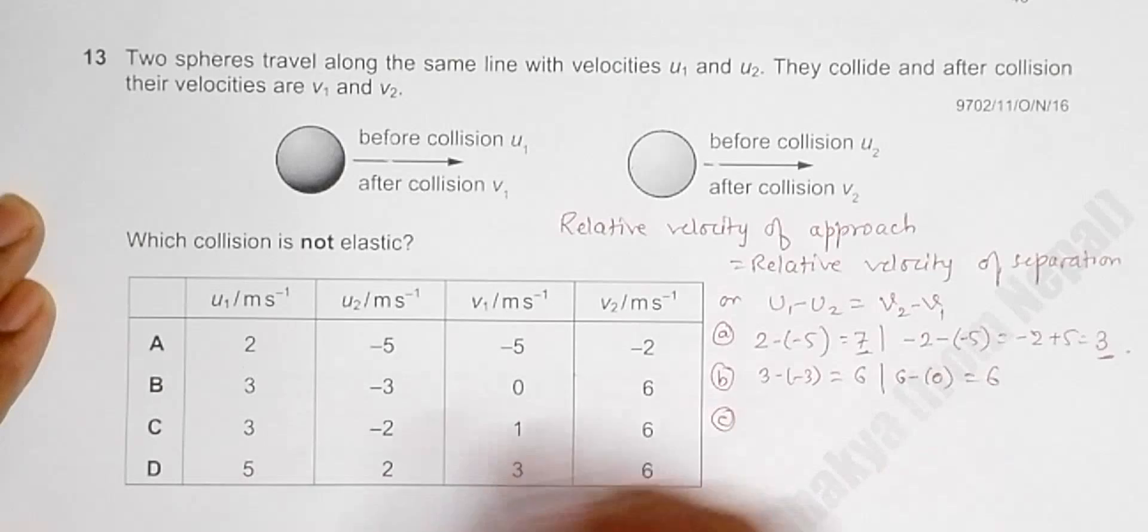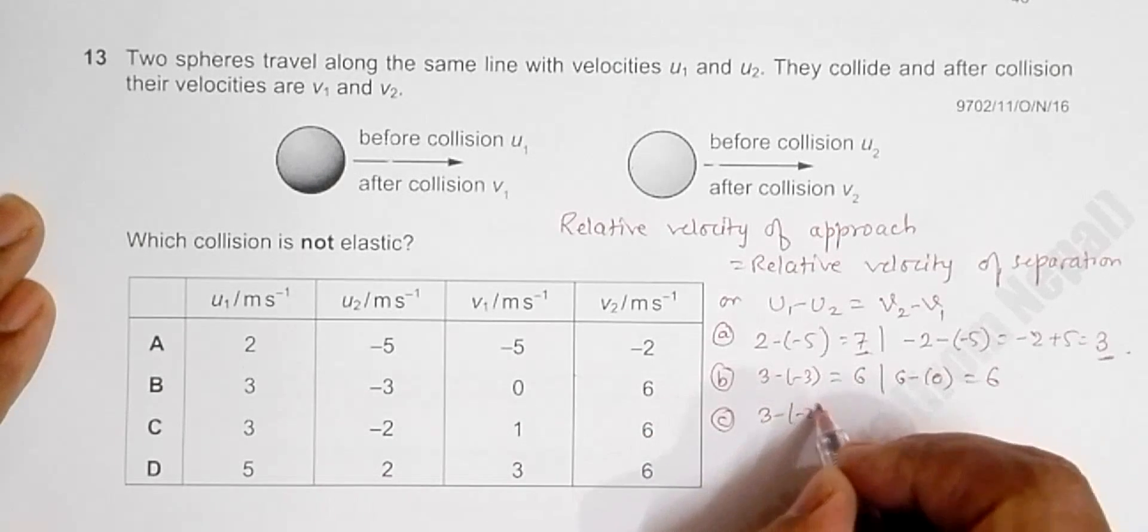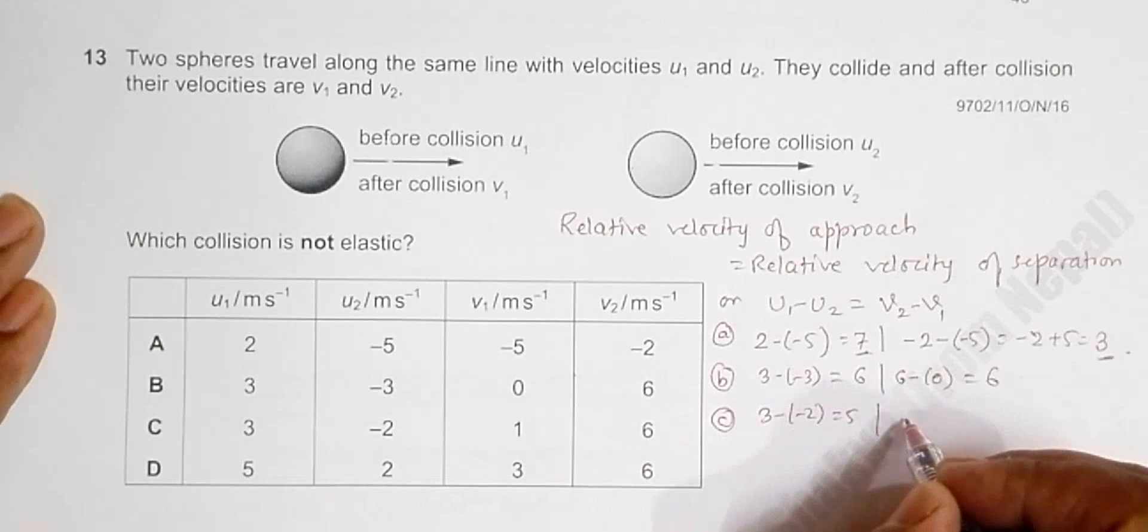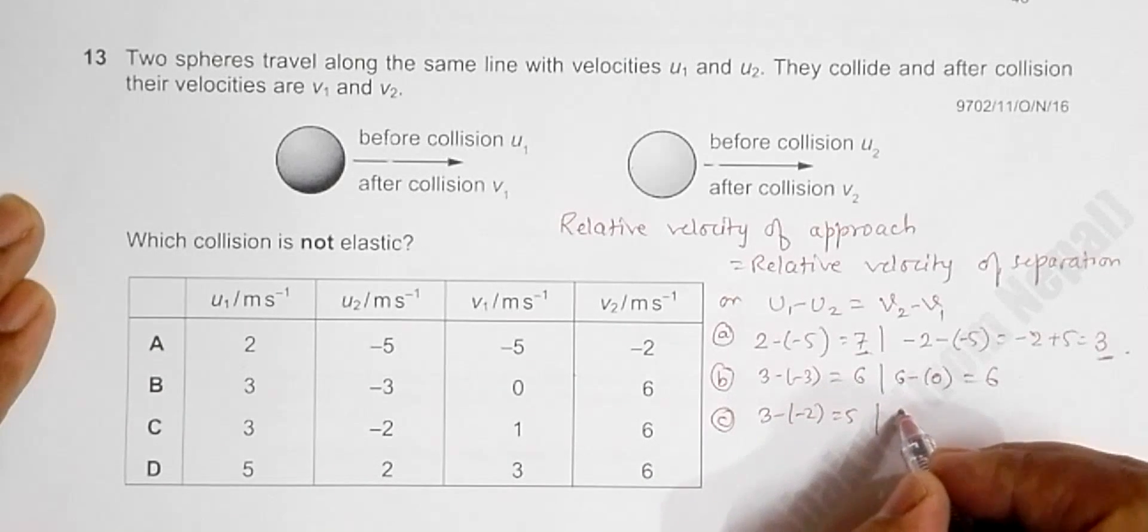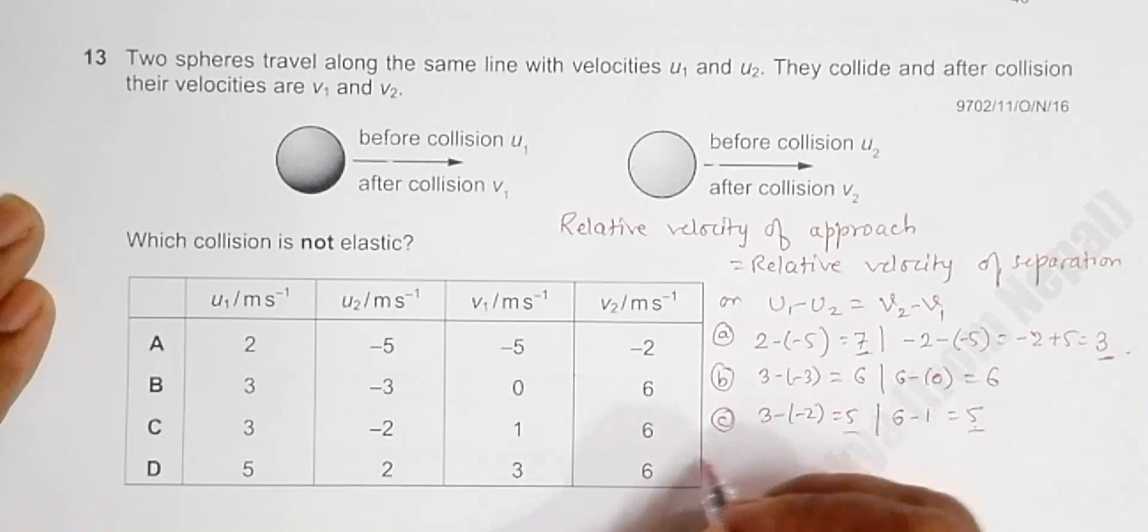For C, it will be 3 minus (-2), which is 5, and then it will be 6 minus 1, that's again equal to 5. Equal, so elastic.